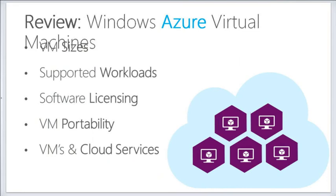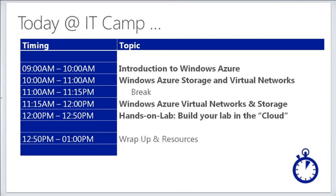We're going to look more at the pieces that support this — the networks. We talked about VM sizes, supported workloads, software licensing, VM portability, and VMs and cloud services. After a short break, we're going to look at storage and networking, what we set up first in the lab before we spin up our VMs, and then we'll move into the lab section. We'll go a lot deeper into storage and networking including VPNs after this break.